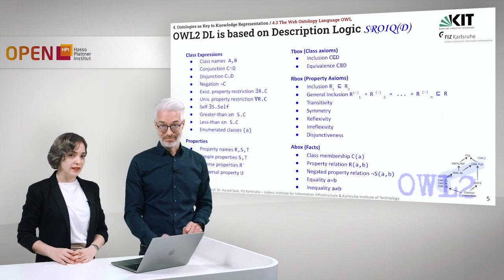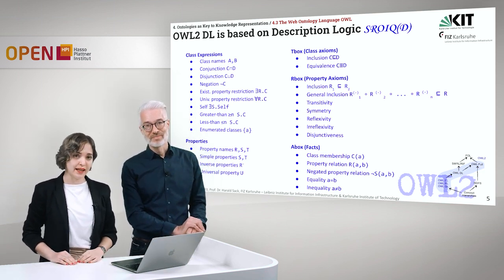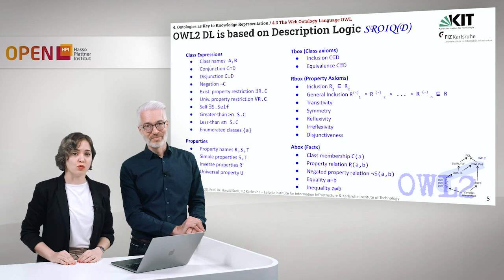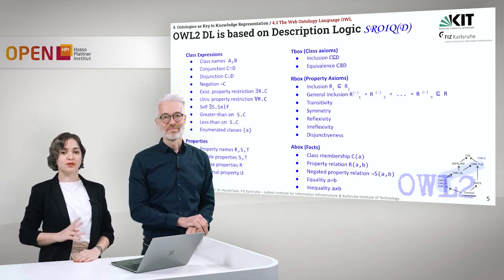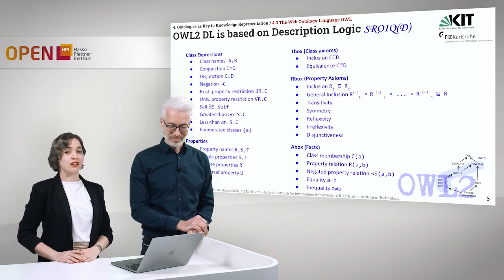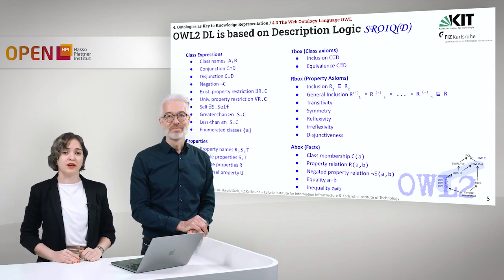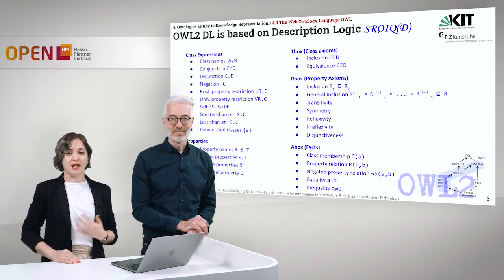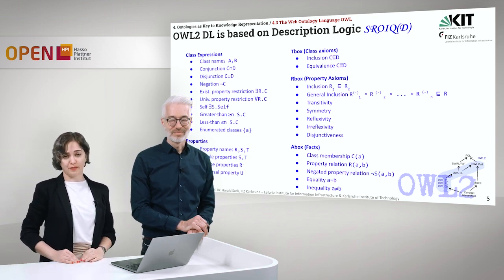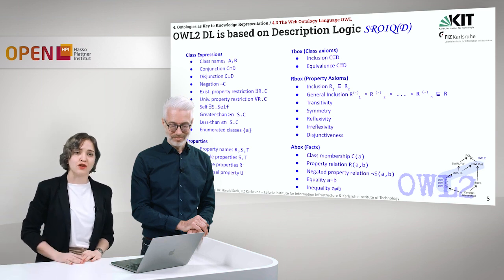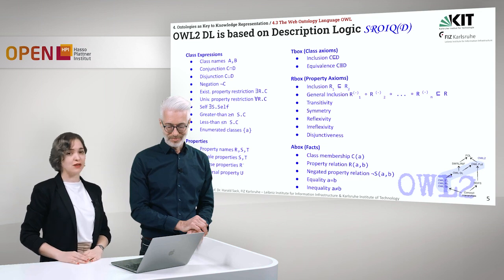OWL2DL is based on description logic and contains class expressions, different properties, class axioms (the T-box), property axioms (the R-box), and facts about individuals, which is in the A-box. We will see more details of each of these properties of OWL2DL in the following slides.